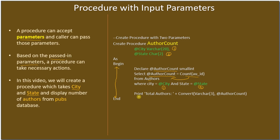Finally we are printing the result — total authors — and we are converting author_count, since author_count is declared as a smallint, and printing the result as 'total authors'. For example if total authors returned is three we will print 'total authors 3'. Based on the input parameter this will change — for example if city is given and state is given, those values get substituted, the count is calculated, and that gets printed in the result.